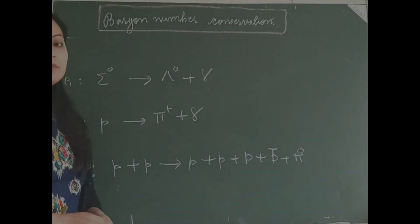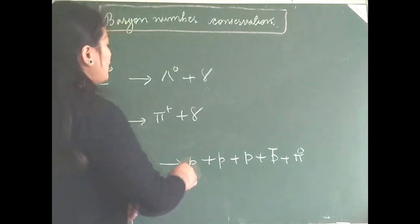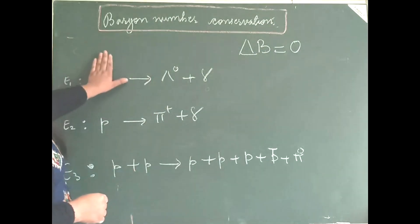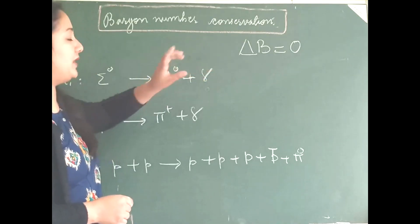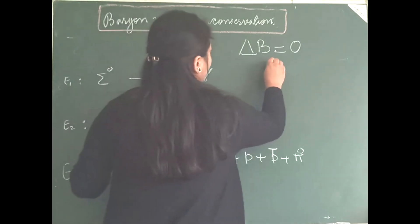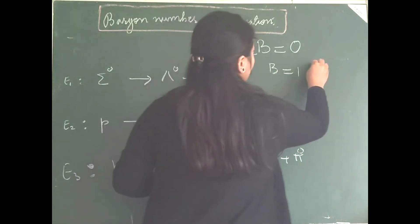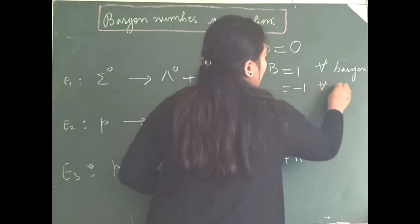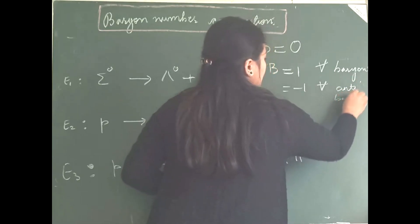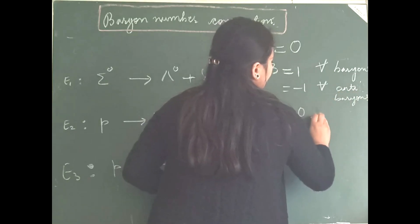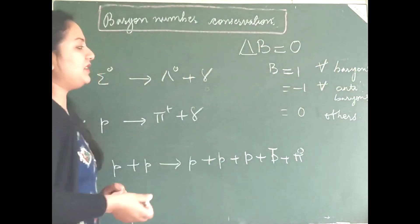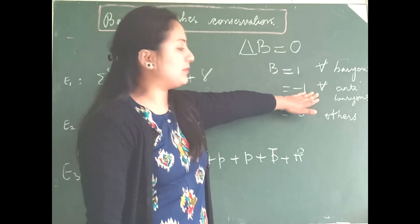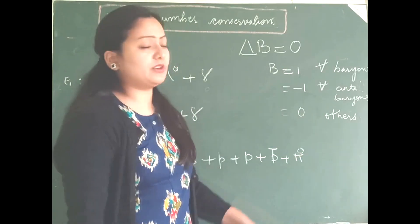Now let us look into baryon number conservation. The baryon number B is 1 for all baryons, minus 1 for all antibaryons, and 0 for anything else — meaning if it is a lepton, its baryon number is going to be 0. The change in baryon number must equal 0 for a conserved interaction.